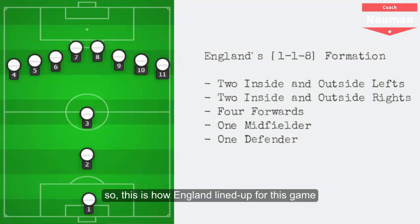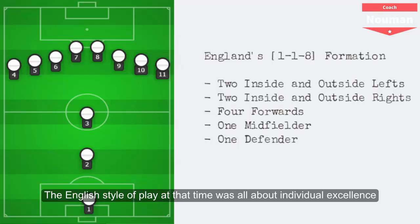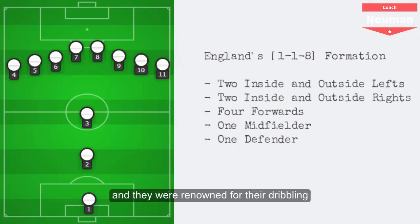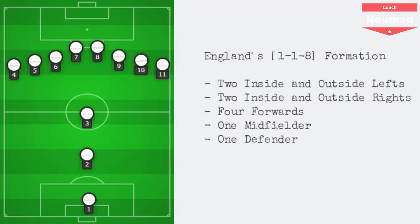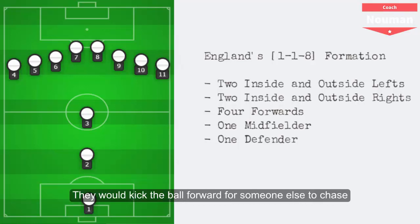This is how England lined up for this game — a 1-1-8 formation with one defender picking up the loose balls, one midfielder and eight attacking players. The English style of play at that time was all about individual excellence and they were renowned for their dribbling. Players would try to take the ball forward as far as possible, and only when they could not proceed any further, they would kick the ball forward for someone else to chase.